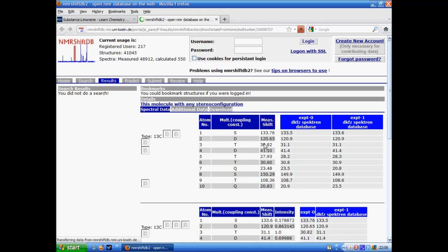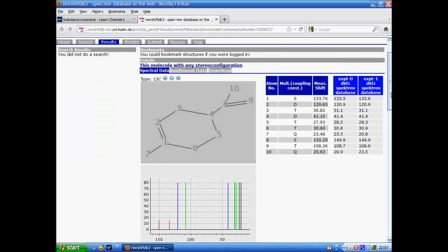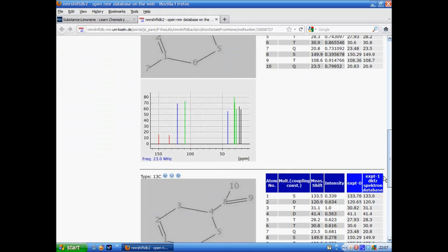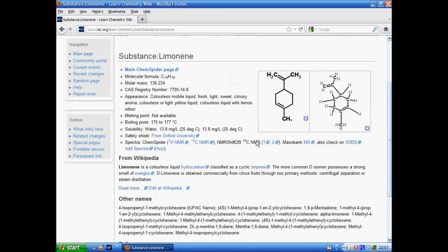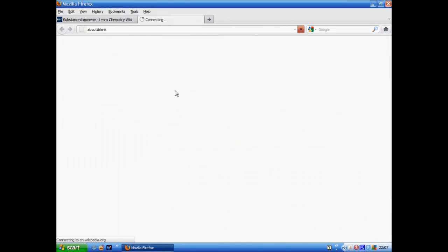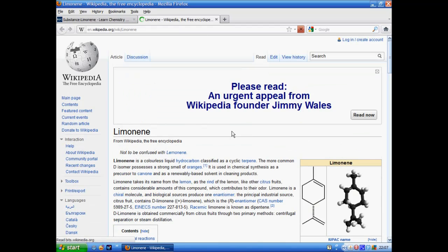We've got properties, we've got links to spectra both in ChemSpider and in other sources. In this case these are links to the NMR Shift DB database using the links that are in ChemSpider. Also using the links in ChemSpider we have a chunk of text from Wikipedia with a description of the compound.